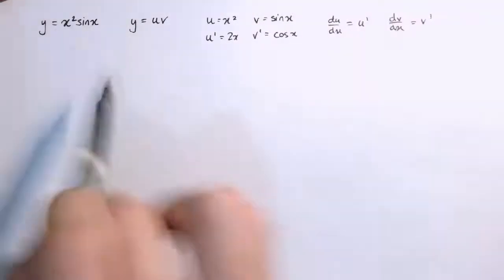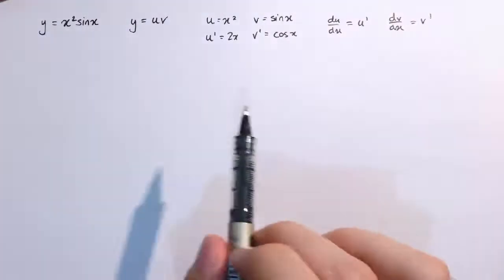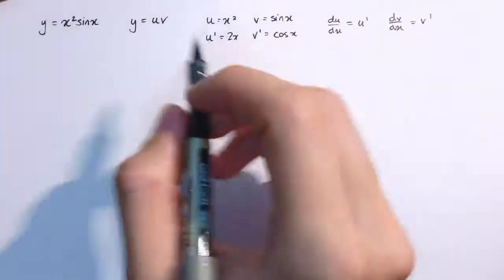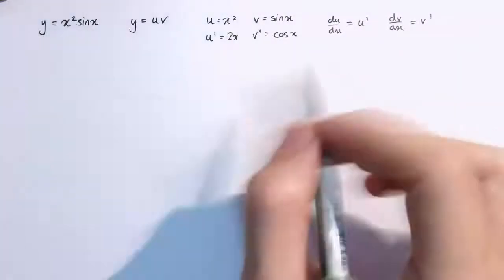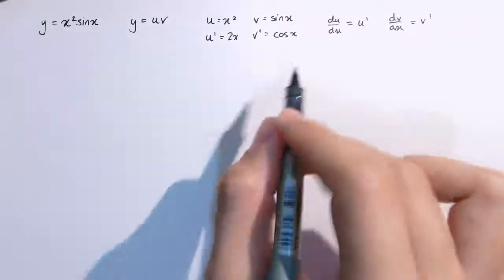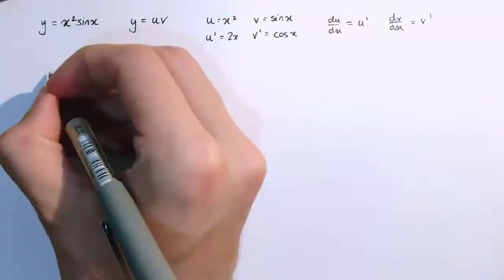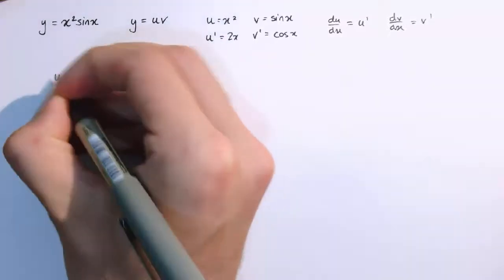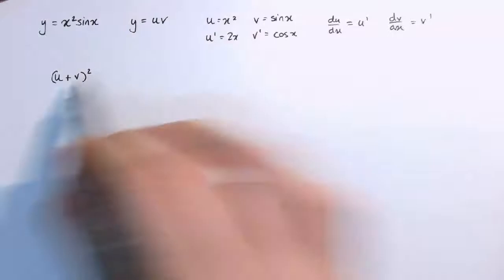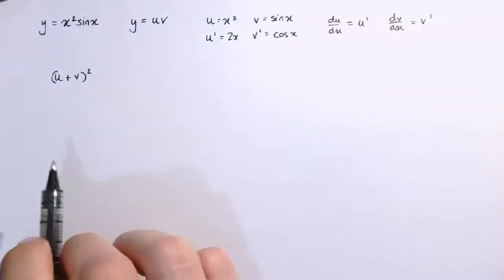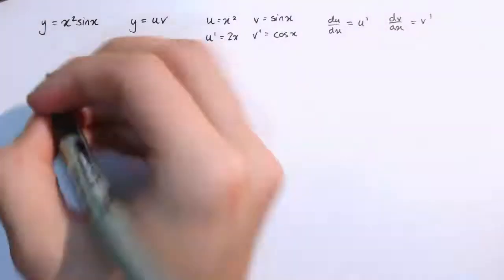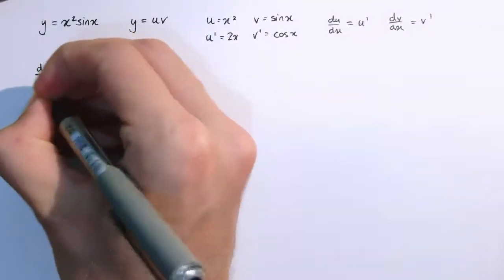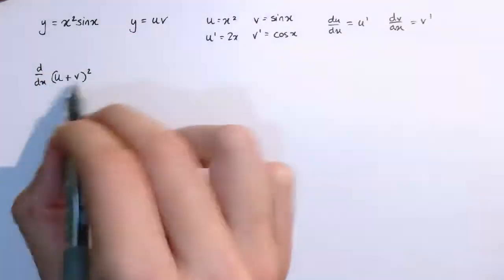We're not going to use that example directly, but to prove the product rule, assuming that the chain rule is already proven, we're going to look at the expression u plus v all squared, where u and v are functions of x.